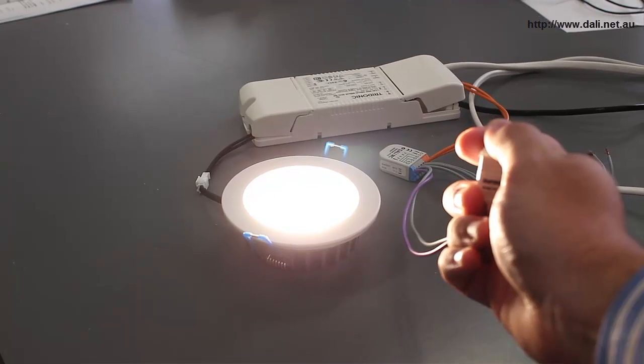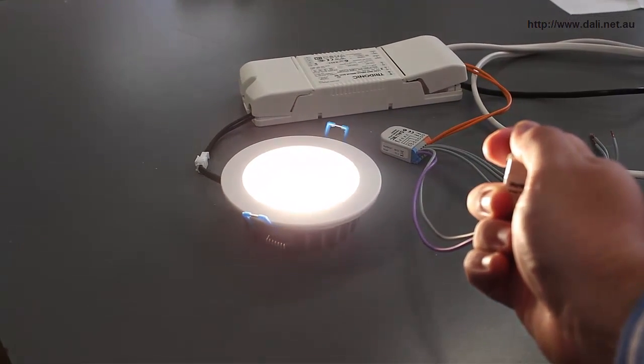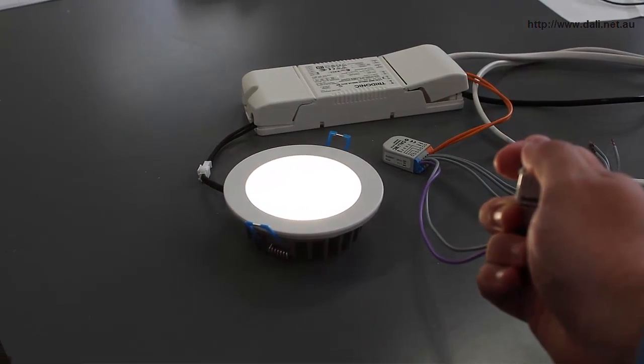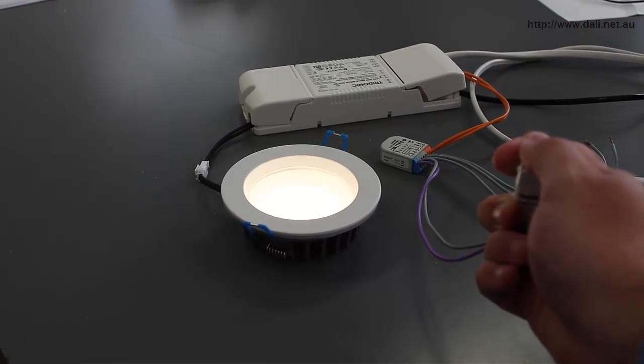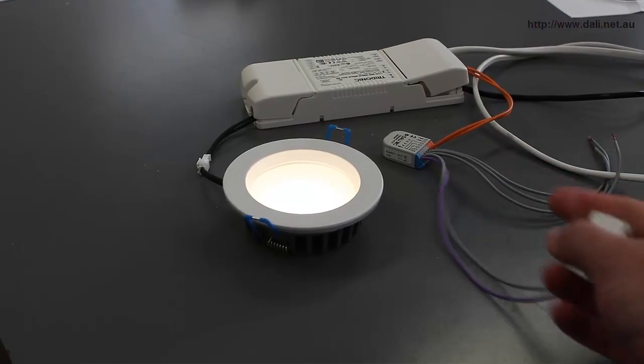Last series we went over the Dali Fade Time setting and how to use it so that your lights turn on and off with a smooth fading effect. Now once you've achieved that, you will want to dim your lights up and down with the same smooth yet controlled precision. In this episode we will be discussing Dali Fade Rate which will allow you to achieve that.